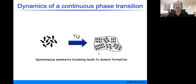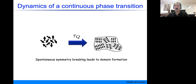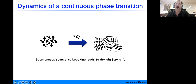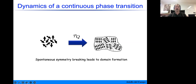When we drive a transition in finite time, domains form and causally separated regions of the system have different spin alignments. In one specific domain we have a value of the magnetization, and in an adjacent domain the spins are pointing along a different direction. At the interface between these domains I will have a topological defect. You can expect that if you drive the transition very slowly you get large domains, but if you do it quickly you get lots of small domains with lots of topological defects — in this case, domain walls.